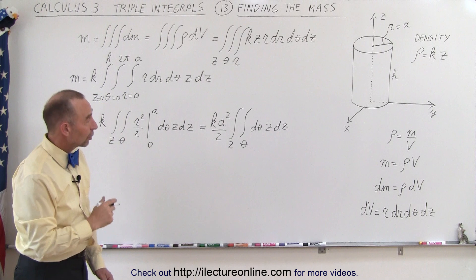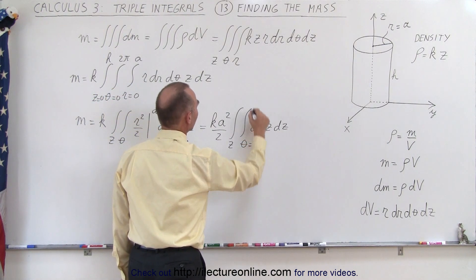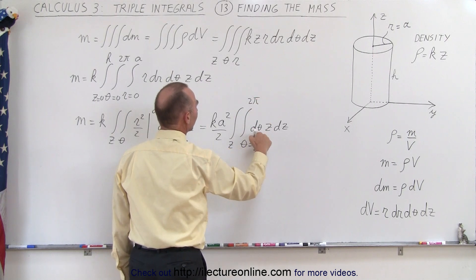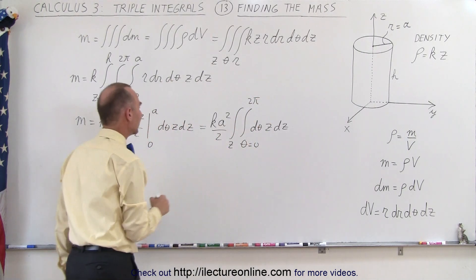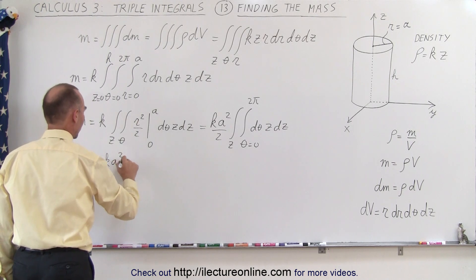Next let's integrate over dθ from θ equals 0 to 2π. The integral of dθ is simply θ, so this becomes equal to k a squared over 2.